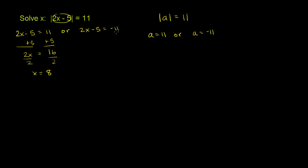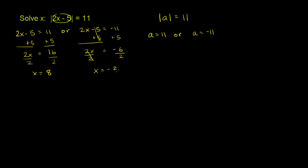Now let's do this situation. 2x minus 5 is equal to negative 11. Let's add 5 to both sides of this equation. The left-hand side, we just get 2x. The 5's cancel out. 2x is equal to negative 6. Now we can divide both sides by 2, and we get x is equal to negative 3.